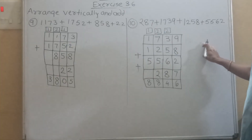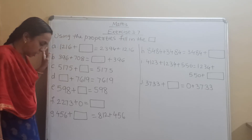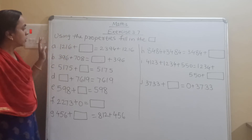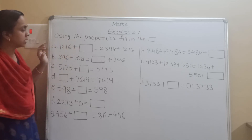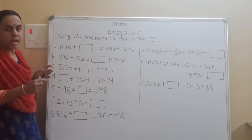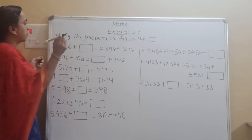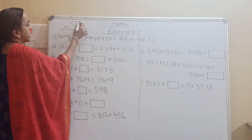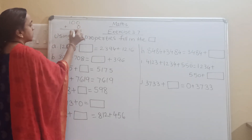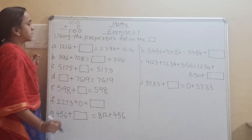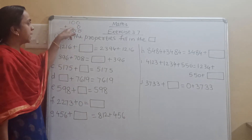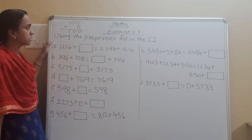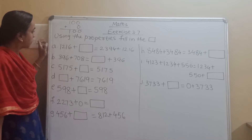Now see page number 48, exercise 3.7: using the properties, fill in the boxes. If we add 0 to any number — for example, 100 plus 0 — the answer is 100; the number does not change. This is called the property of addition.